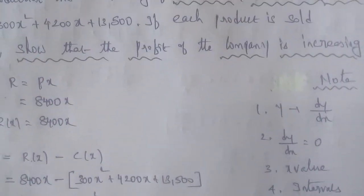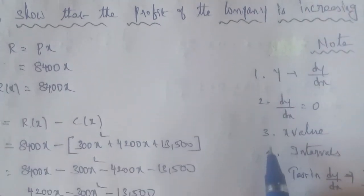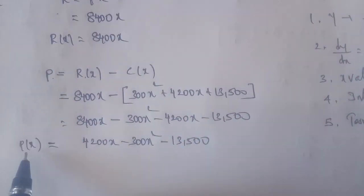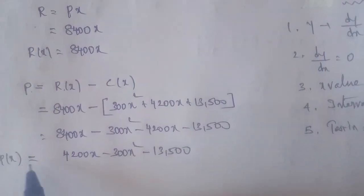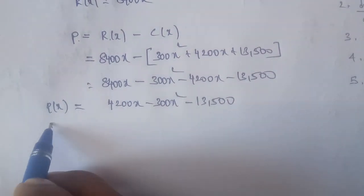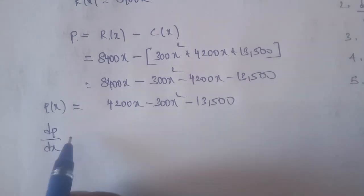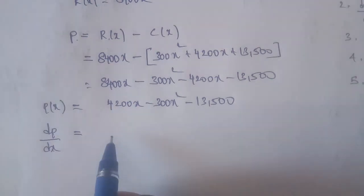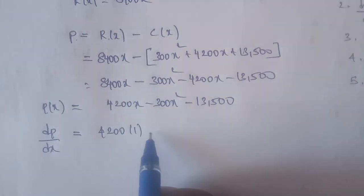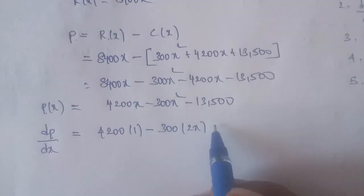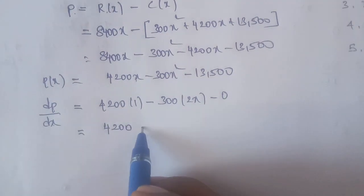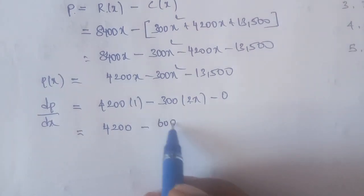To show the company's profit is increasing, we differentiate the profit function. dP/dx equals the derivative of minus 300X squared plus 4200X minus 13500 with respect to X. Differentiating: dP/dx equals 4200 minus 300 into 2 times X, which gives dP/dx equals 4200 minus 600X.